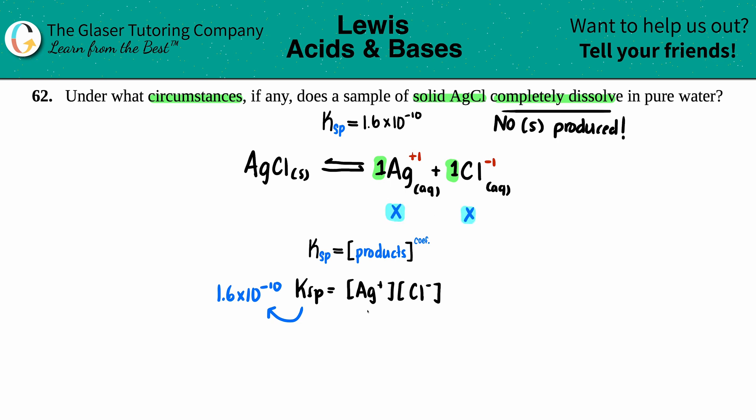So Ag+ is x and Cl- is x. So we got 1.6 times 10 to the negative 10 equals x times x, and x times x is just x squared. So I'm just going to erase this and just say that that's x squared.